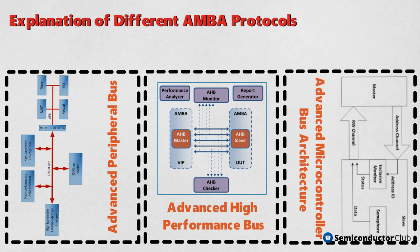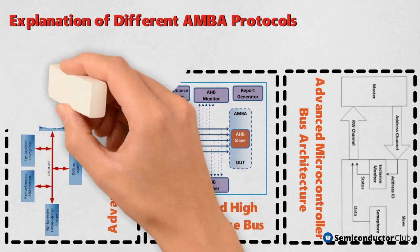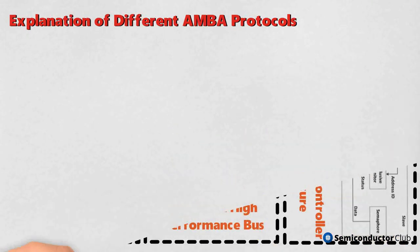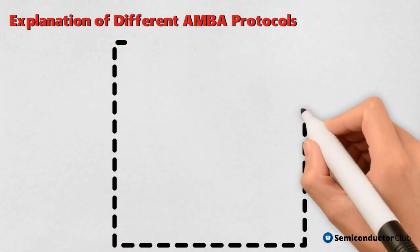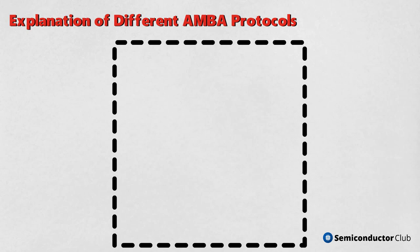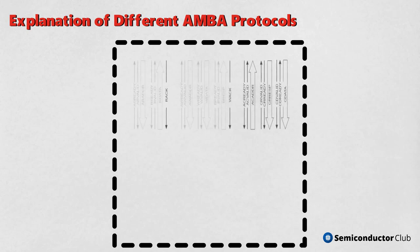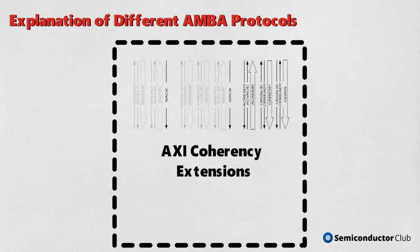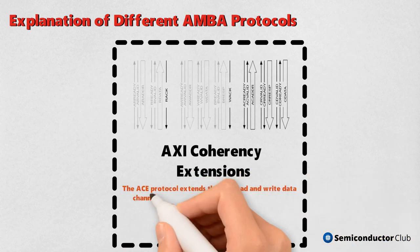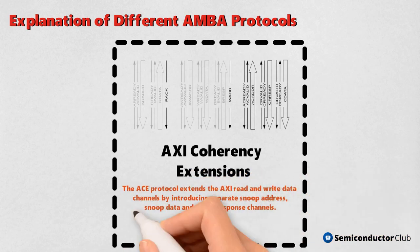ACE: the ACE protocol extends the AXI read and write data channels by introducing separate snoop address, snoop data, and snoop response channels. These extra channels provide mechanisms to implement a snoop-based coherency protocol.